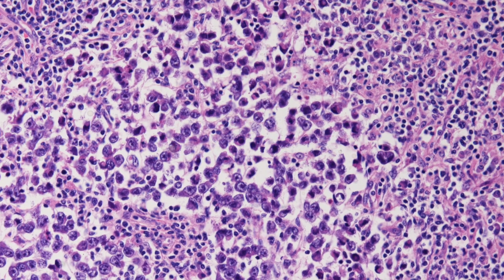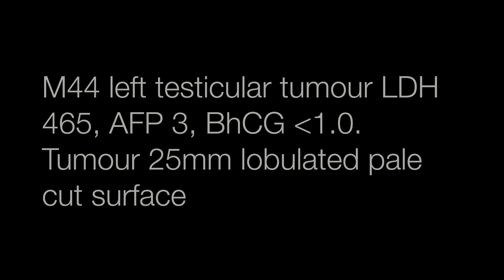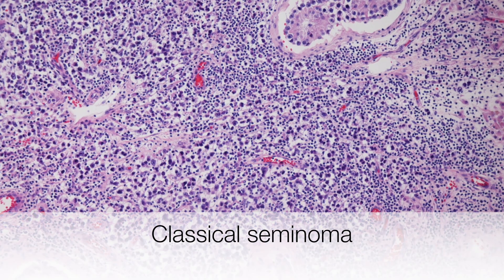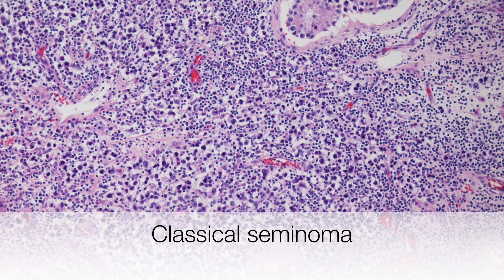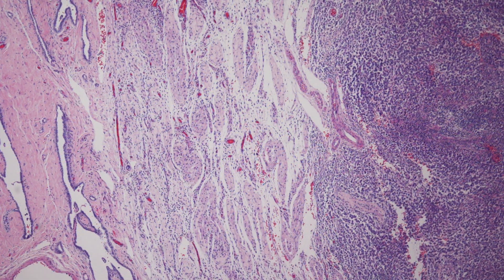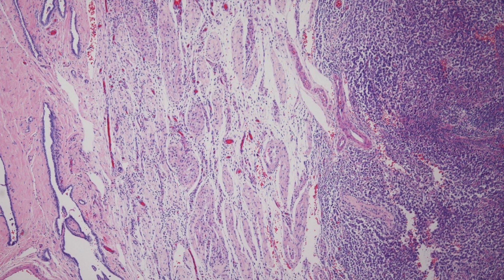Case number six was a male of 44 with a left testicular tumour. LDH was 465, AFP 3, beta-HCG less than 1, and the tumour had a lobulated pale cut surface. The diagnosis is a classical seminoma. This was included to compare to the first case, which is the spermatocytic tumour.